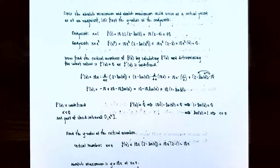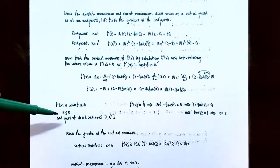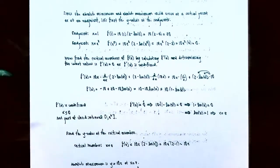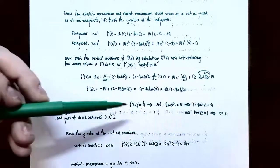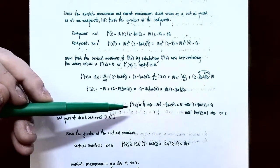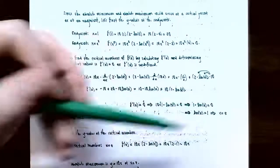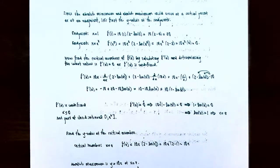Let's find where the derivative is undefined. There are no x's in the denominator, so no division by zero, but ln x is only defined for x > 0, so the derivative is undefined for x ≤ 0. Since our closed interval is [1, e²], that's not a concern. However, the derivative could be 0. Setting f'(x) = 0: 10(1 − ln x) = 0, so 1 − ln x = 0, giving ln x = 1. Since the natural log is log base e, ln e = 1, so x = e is the critical number.